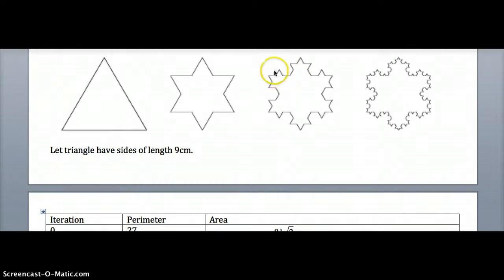Alternatively just count up the lines - there's 48 little lines and they're all one long. This time there were nine long here, three long here, one long here.